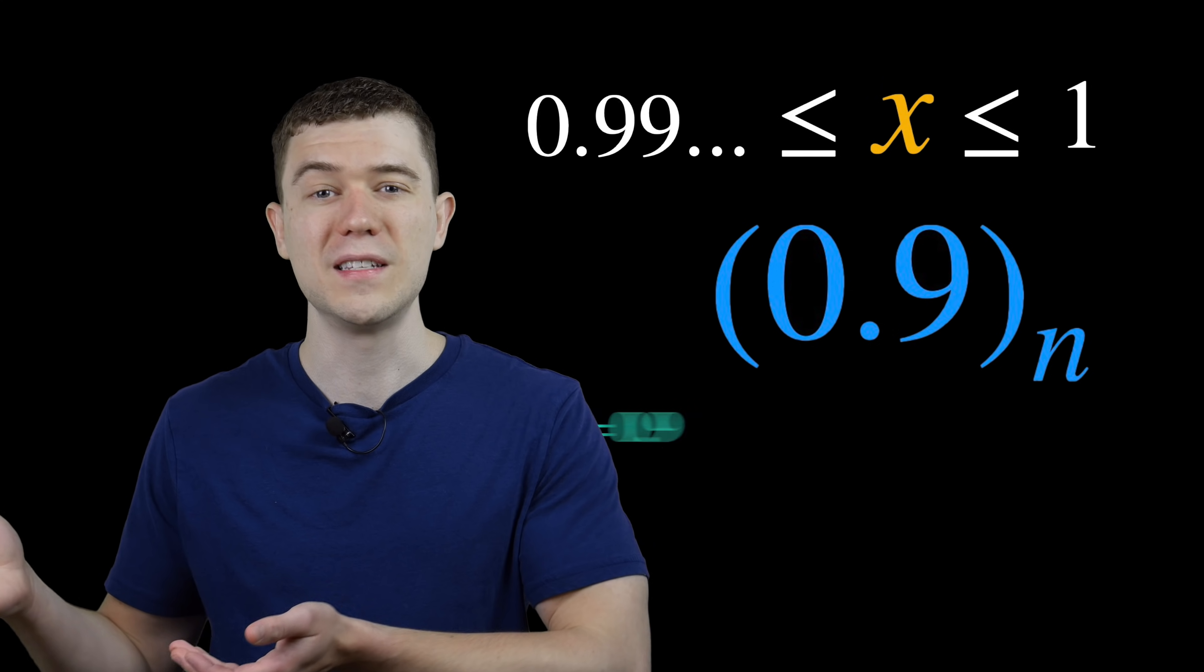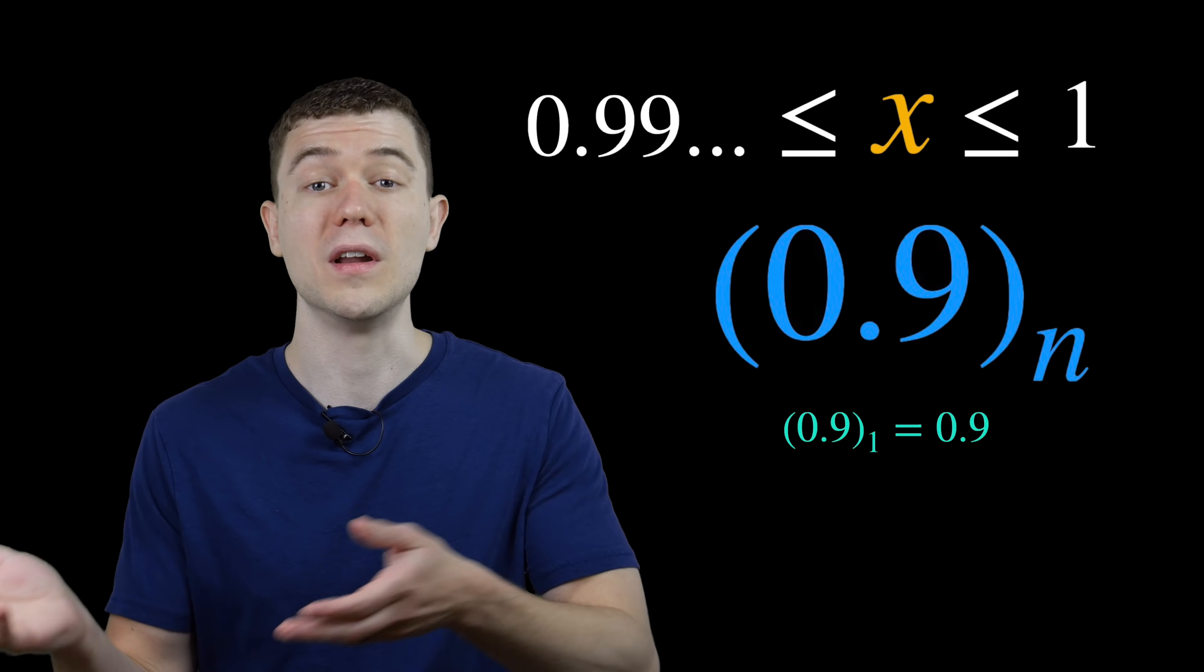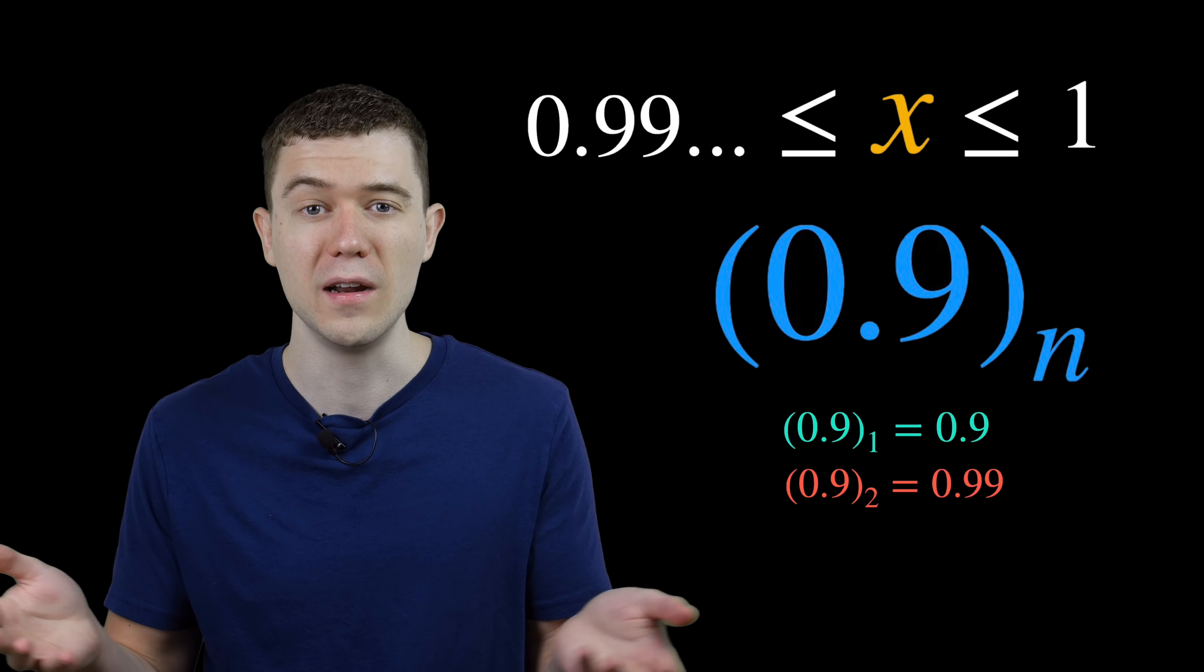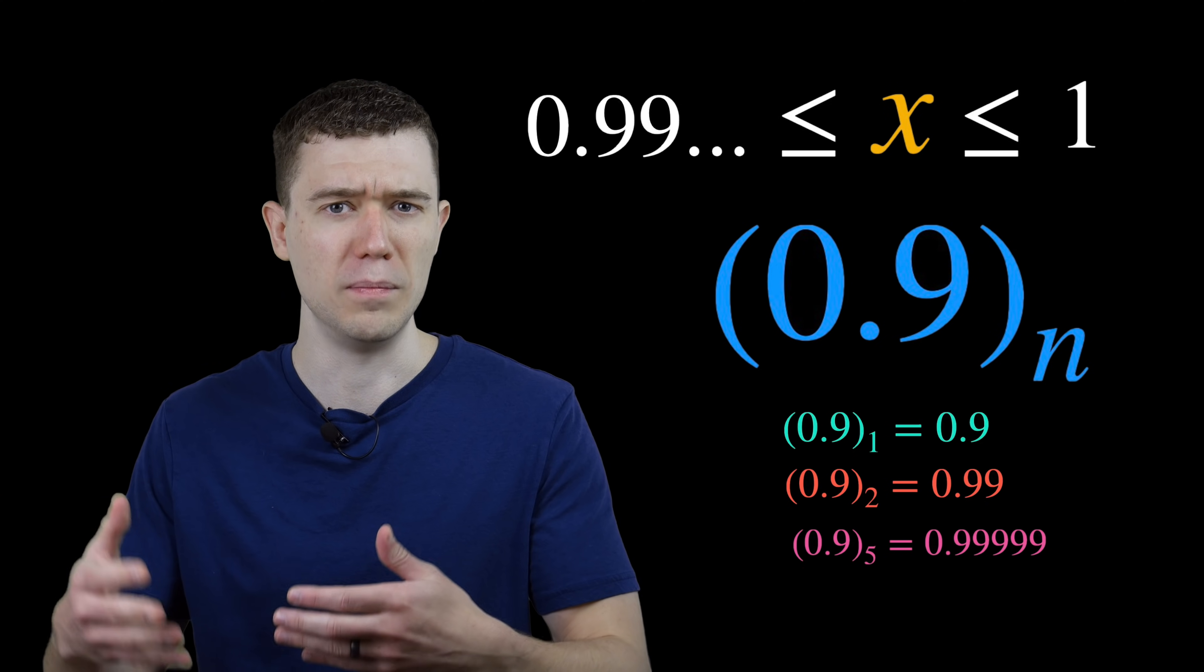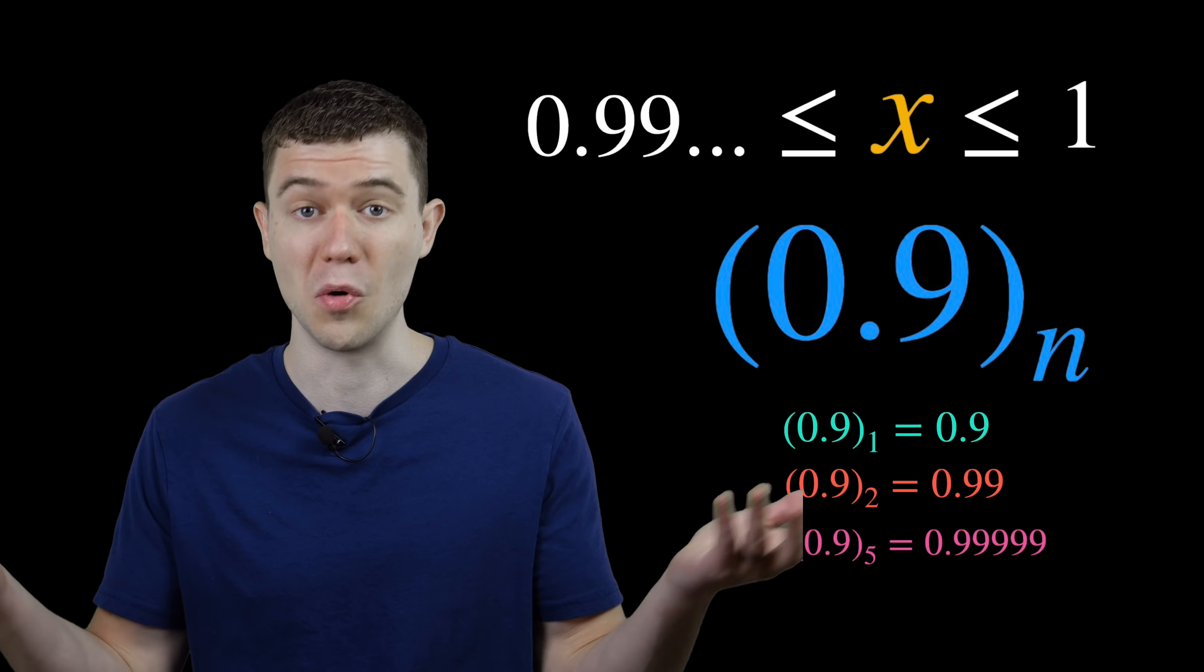So for example, 0.9 sub 1 would be 0.9, 0.9 sub 2 would be 0.99, 0.9 sub 5 would be 0.99999 and so on forever.